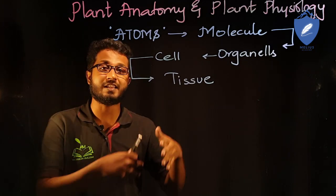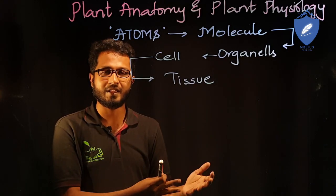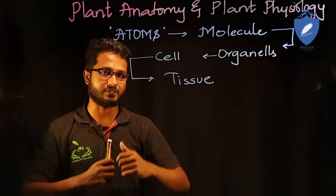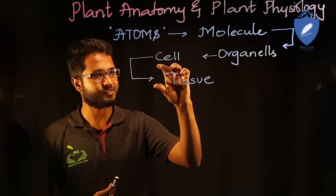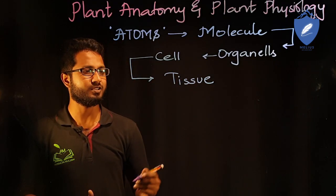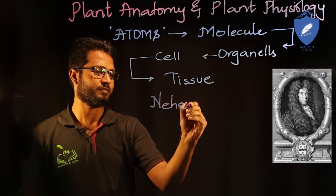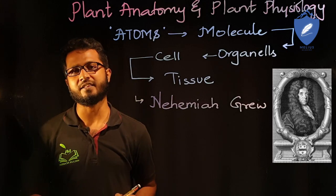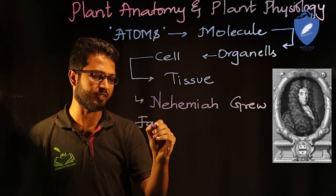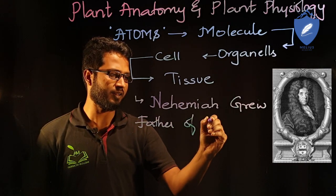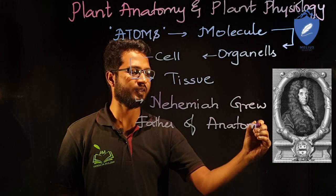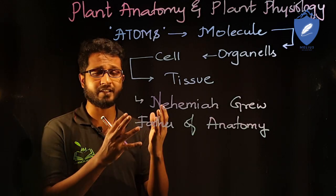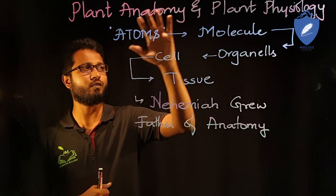In animals, tissues combine together to form organs, and organs combine together to form an organism. But in plants, we restrict ourselves to tissues. It was Mr. Nehemia Gru who is considered the father of anatomy, because he was the one who initially worked on these aspects of anatomy and also published data regarding plant tissues.